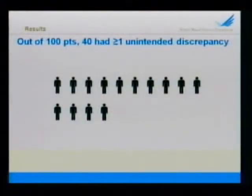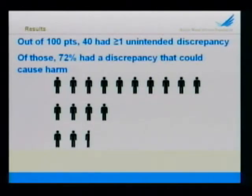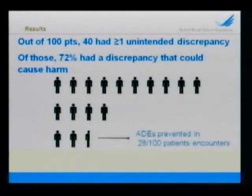For every 100 patients that entered the study, we found that 40 of them had equal to or more than one discrepancy. And of those, 72 percent had a discrepancy that our rating team felt could have caused harm. That means 28 out of every 100 patients had a discrepancy that could cause potential harm.